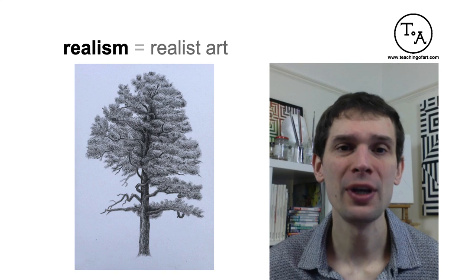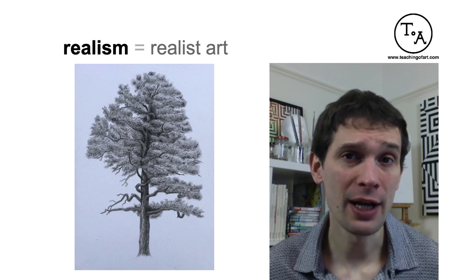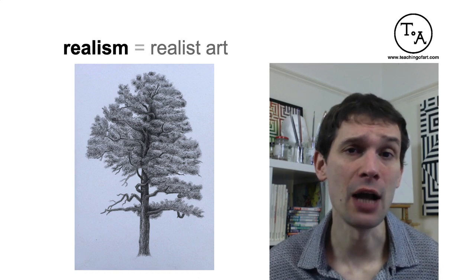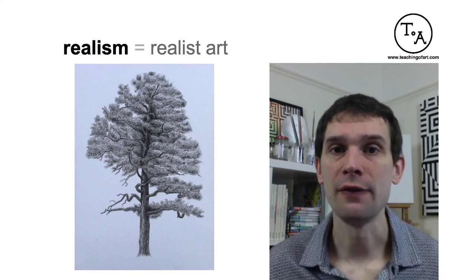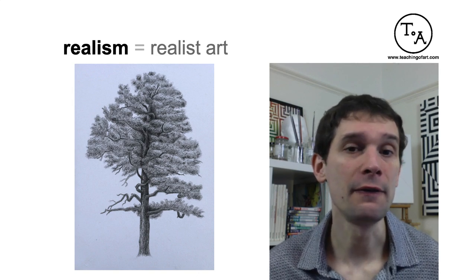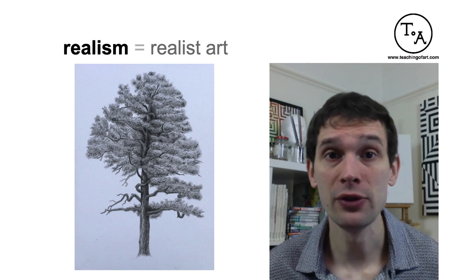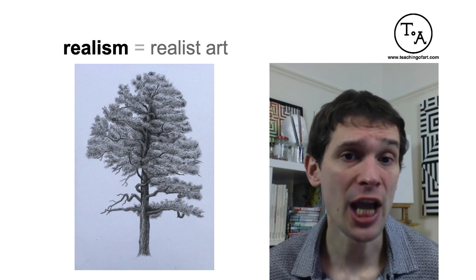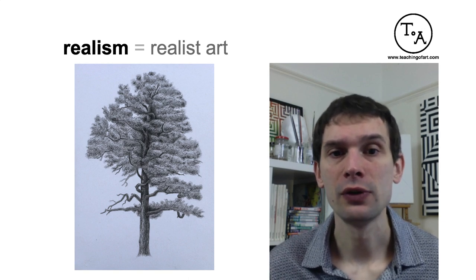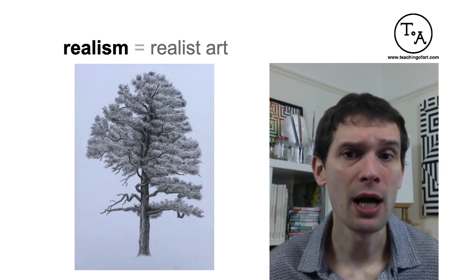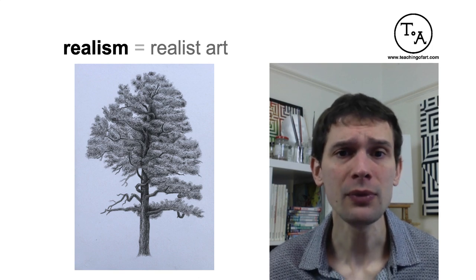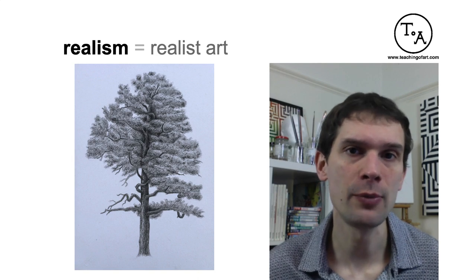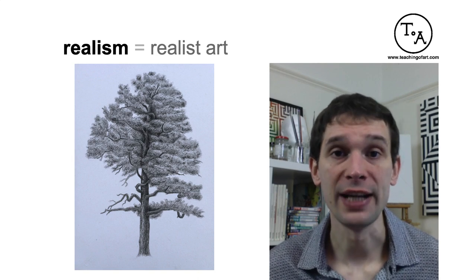Here we have one of my drawings — it is a drawing of a tree, and it is a very realistic drawing. You can clearly see that it is a tree. Notice that there are a lot of details; it is very organic. We can feel the volume as the tree appears to be three-dimensional, done by appropriate shading. We can also see details like the texture of the bark on the tree trunk, and we can feel the individual leaves. So this is basically a textbook example of realist art.